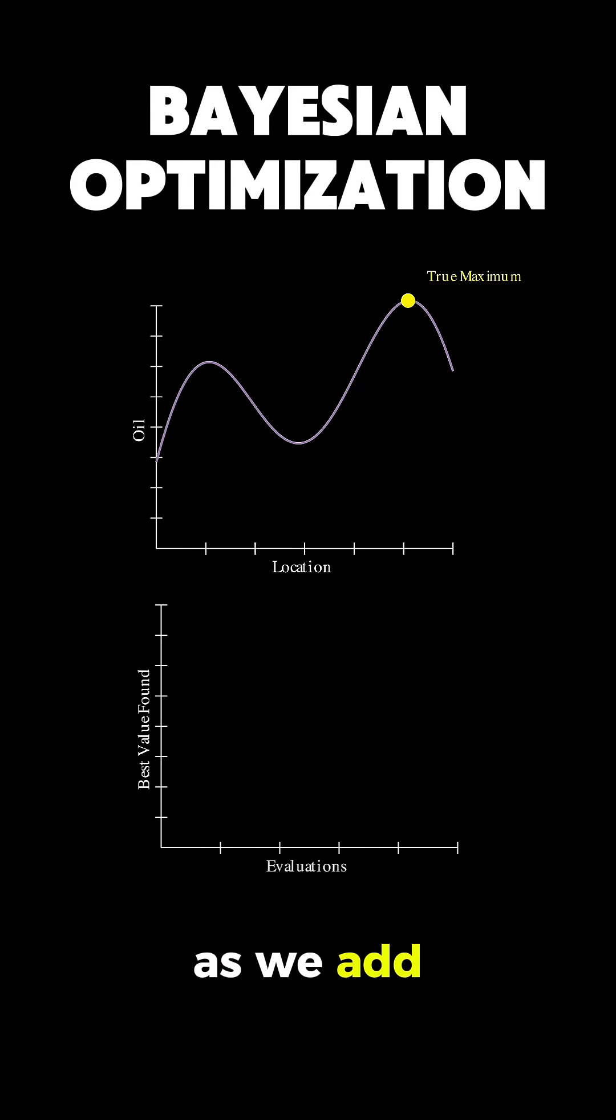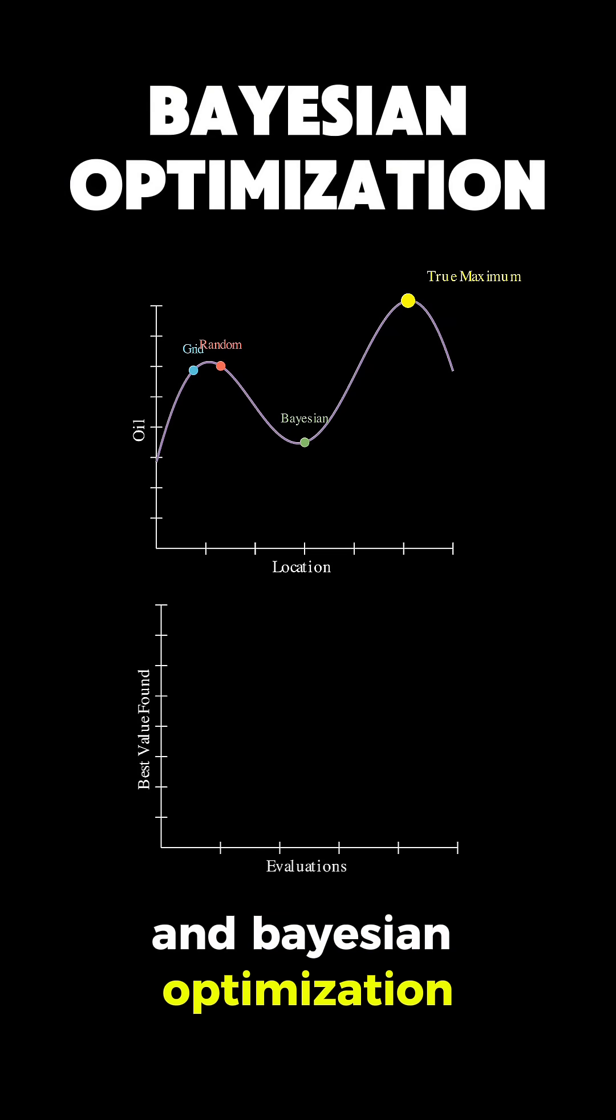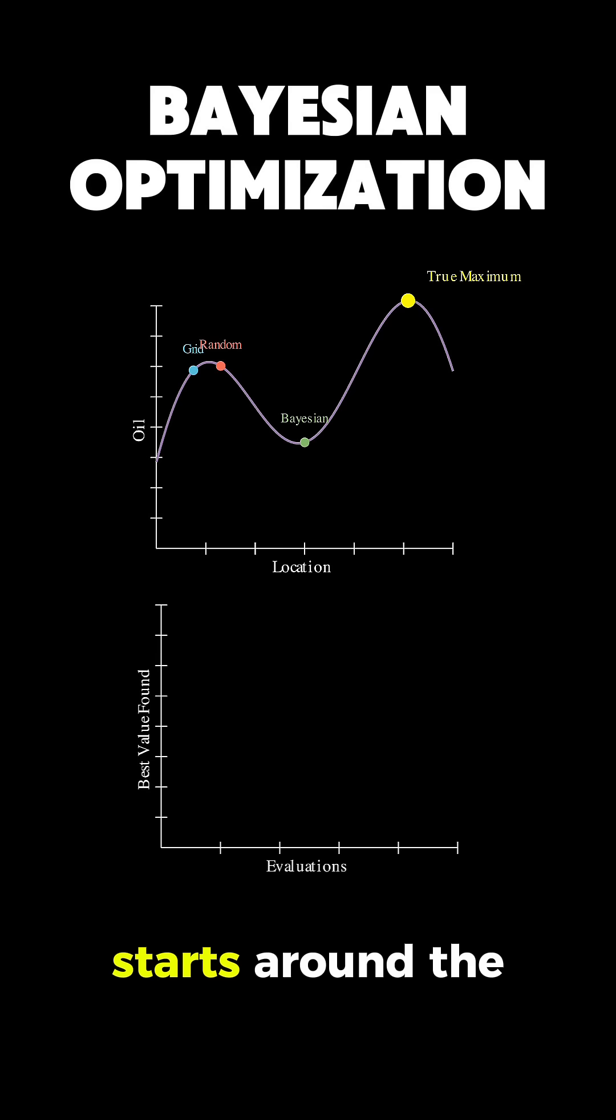Watch what happens as we add points one by one. Grid search, which is the blue point, starts at 0.75. Random search, which is the red point, at 1.3. And Bayesian optimization, which is the green point, starts around the minimum area of 3.0.